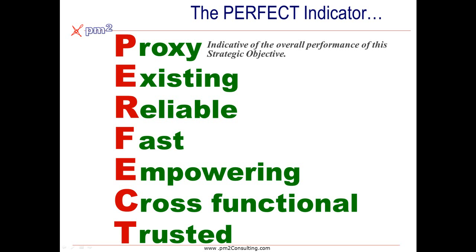That indicator of absenteeism doesn't predict what's broken — it could be the pay scale, it could be the boss, it could be the culture, it could be the environment. We don't need five or ten metrics to capture each of the possibilities. The one proxy covers them all.